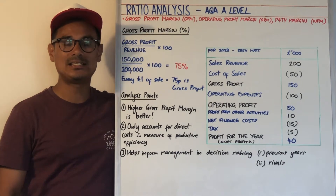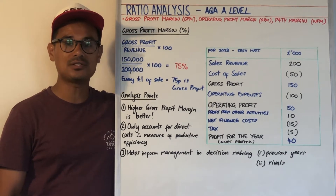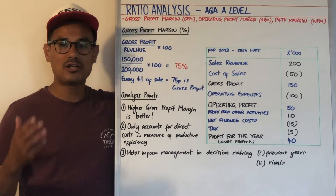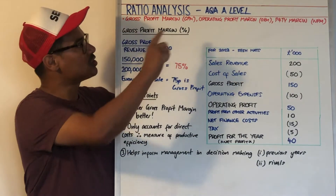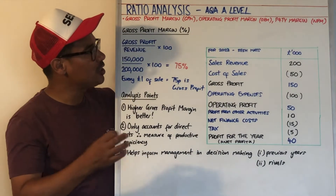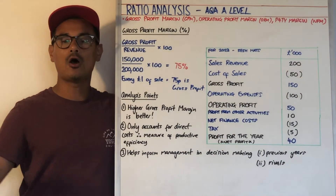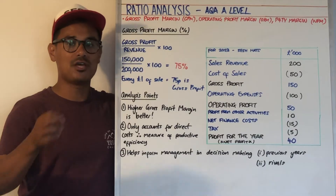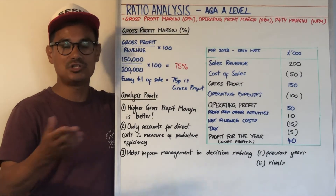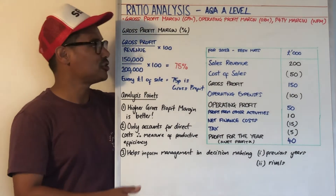This is a session on ratio analysis for AQA A-level business. The ratios we're going to examine here are gross profit margin (GPM), operating profit margin (OPM), and profit for the year margin, which is the same thing as the net profit margin.